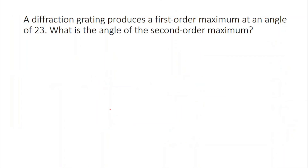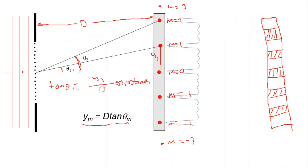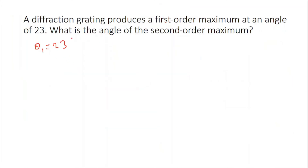Let's solve two examples. Example one: a diffraction grating produces a first order maximum at an angle of 23 degrees, so theta one equals 23 degrees. What is the angle of the second order maximum? We need to find theta two. The formula is a sine theta equals m lambda.